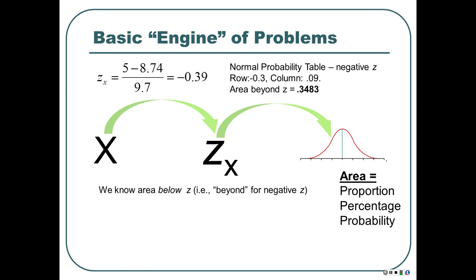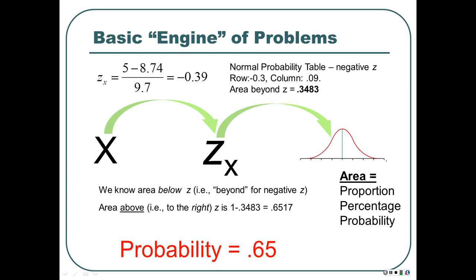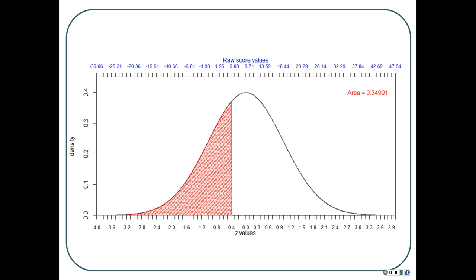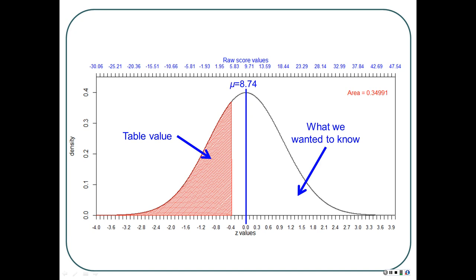We know the area below z, but we actually want the area above — to the right of z. So we do 1 minus: 1 minus 0.3483 equals 0.6517. So about 65% — a probability of 0.65. A lot of people get a score above that. The table gives you the area below z, so 1 minus gives you the area above. Z-scores can work for any distribution, but only sometimes can we use the normal approximation.